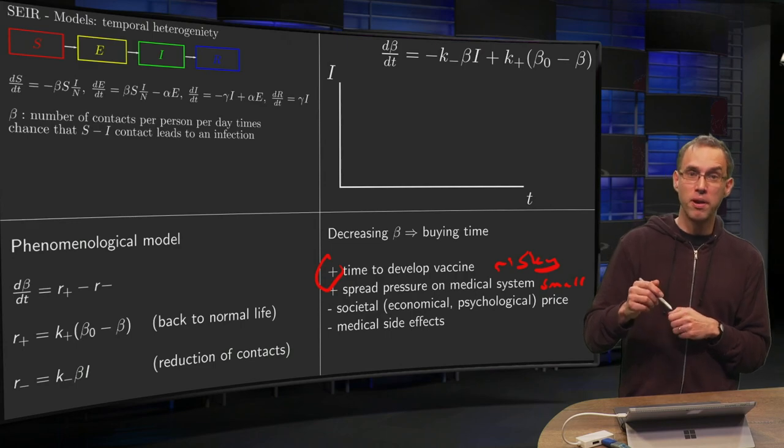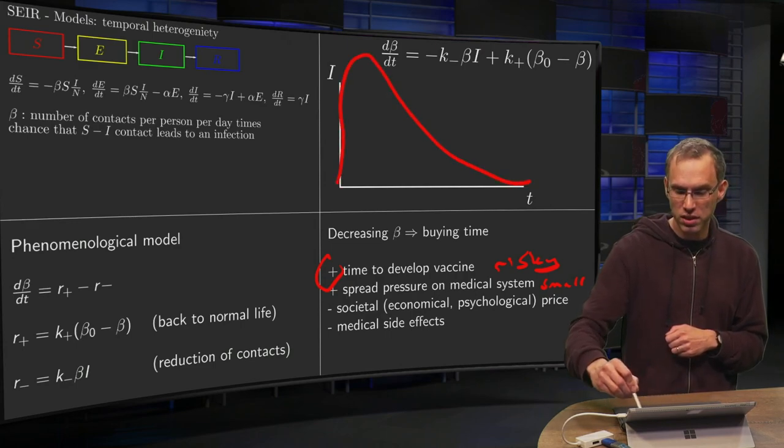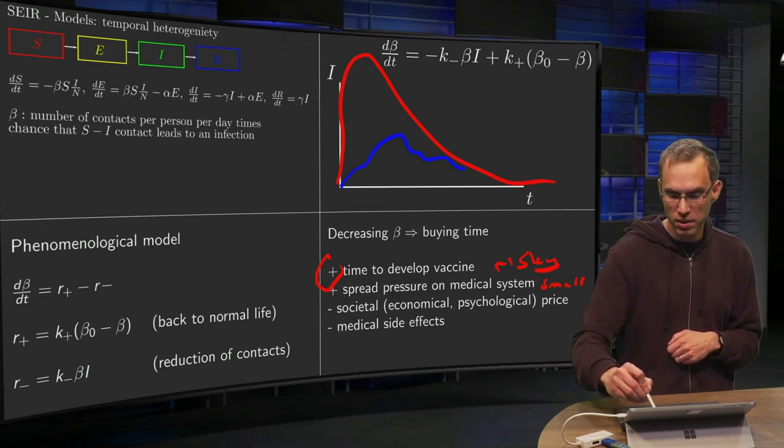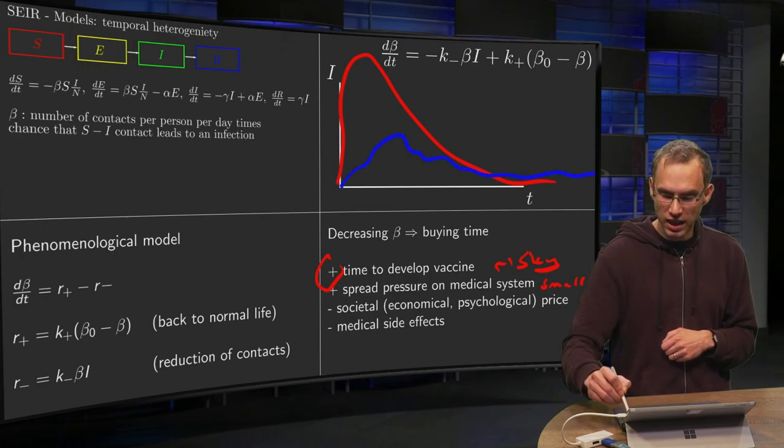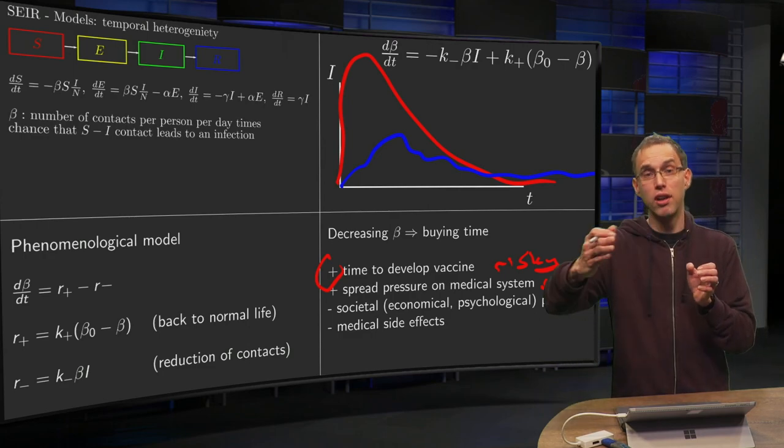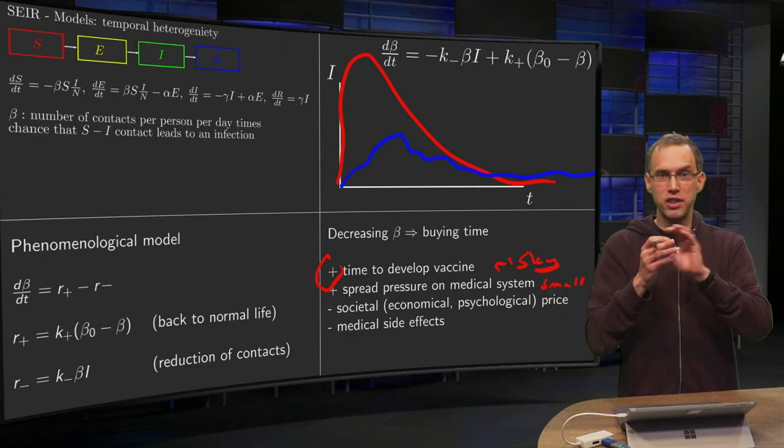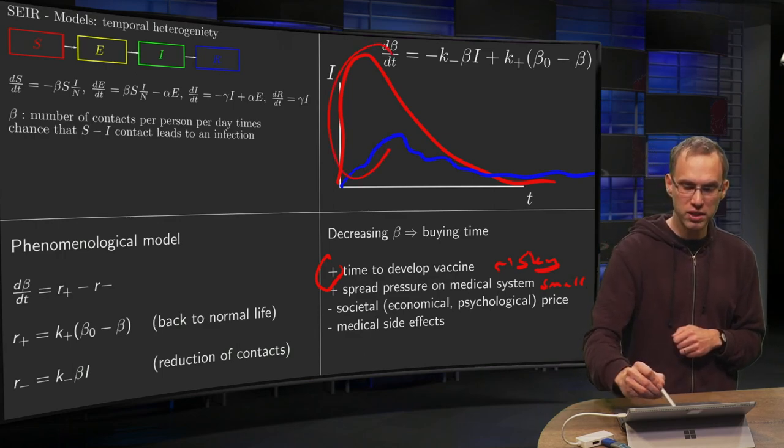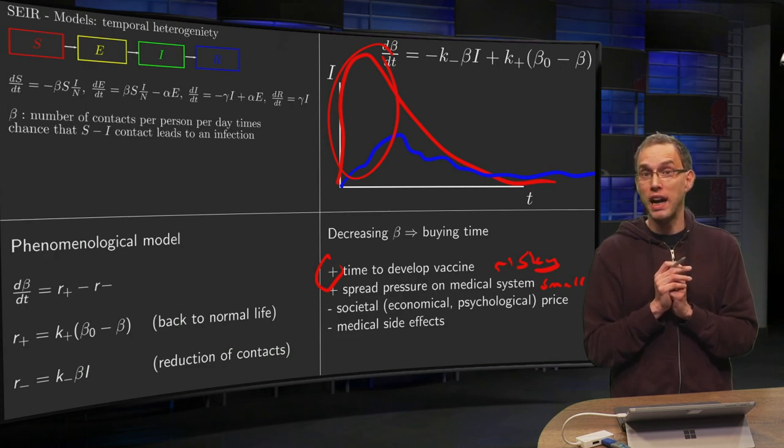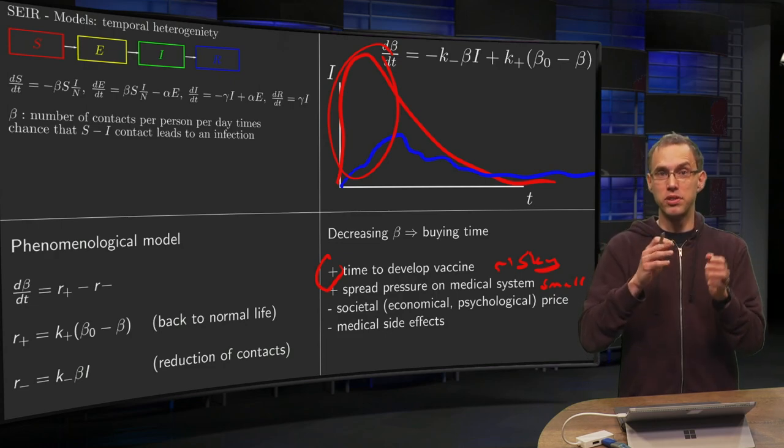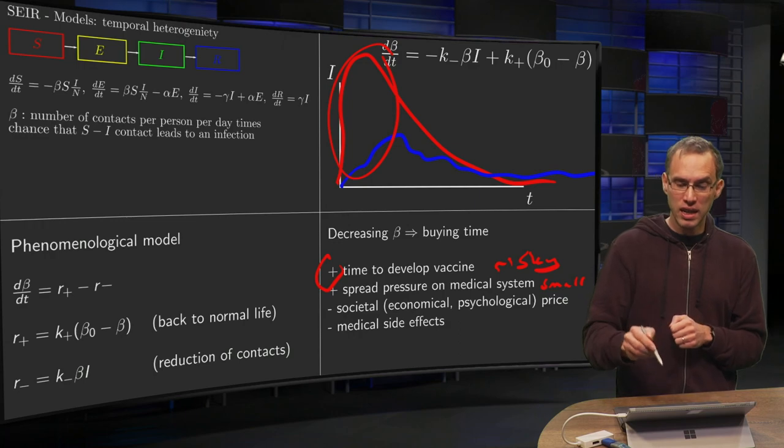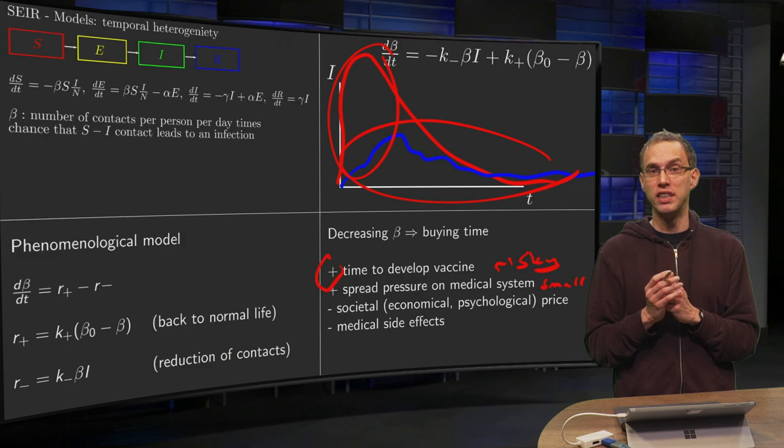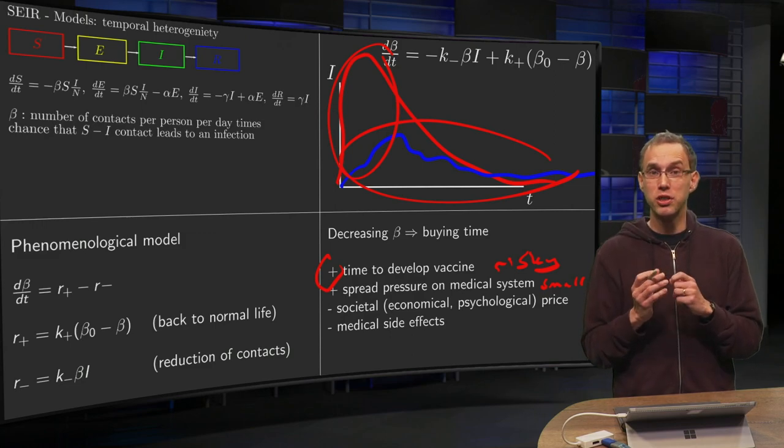The third one, something which came up more recently: with no measures, versus with measures, the infection takes a lot longer. Viruses are always changing. If you have some mutation in the fast case, mutations won't have any chance to spread because the epidemic goes too fast. With measures, the epidemic is slower and possible mutations could spread.